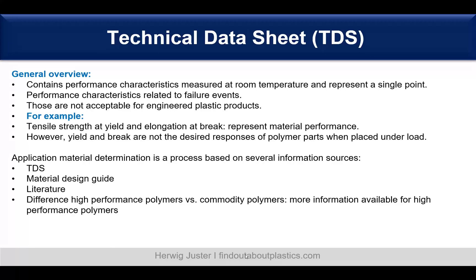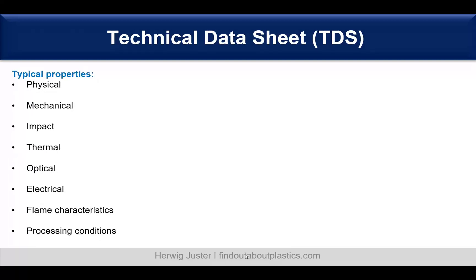So the higher you go up in the plastics pyramid, the more information is usually available. When we look at the TDS, the typical properties covered are: physical properties, mechanical and impact properties, thermal, optical, electrical, flame characteristics, and processing conditions.